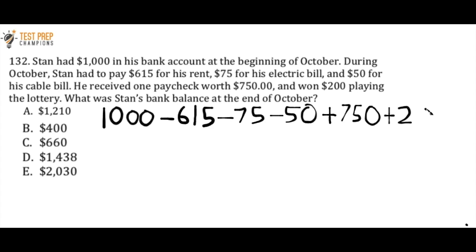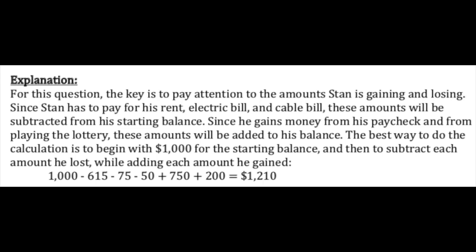Calculators are fair game for every question on this video unless I say otherwise. So we can run this in the calculator: $1,000 minus $615 minus $75 minus $50 plus $750 plus $200, and we'll see that A is the correct answer. Let me show you the written solution now — you can pause the video, take all the time you need to study this, and whenever you're ready we'll go on to the next question.